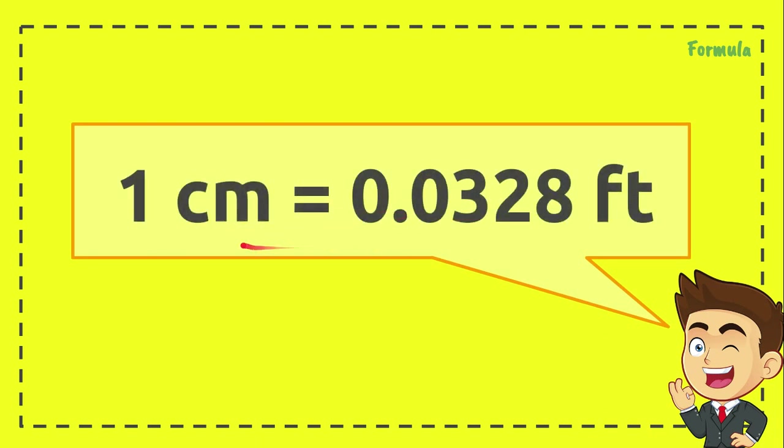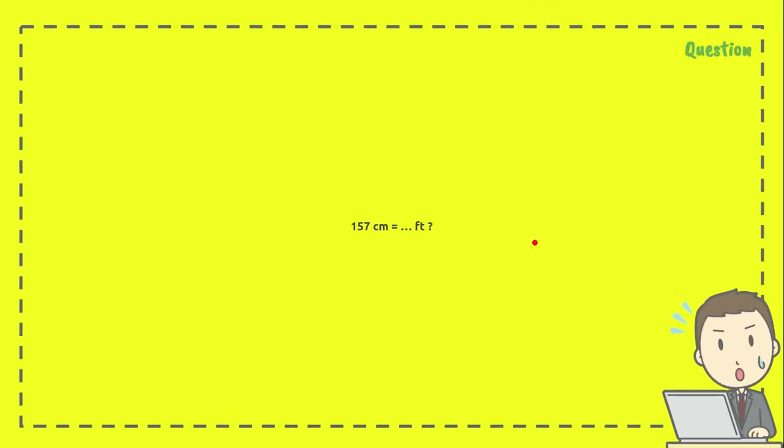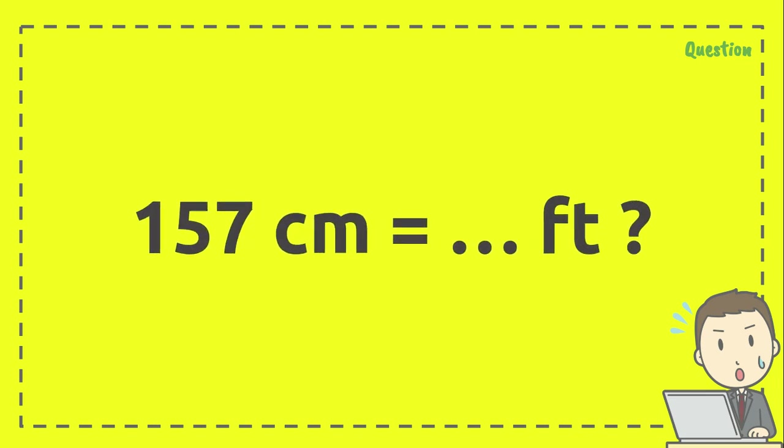1 centimeter equals 0.0328 feet. And here's the question: 157 centimeters equals how many feet?